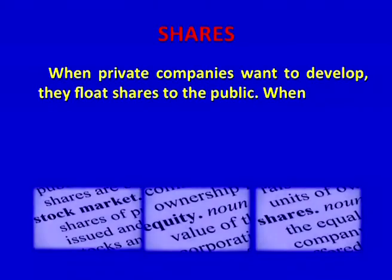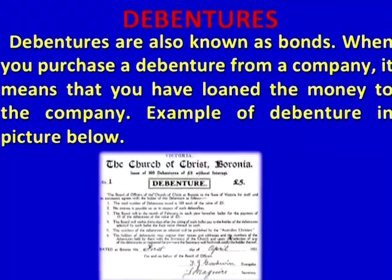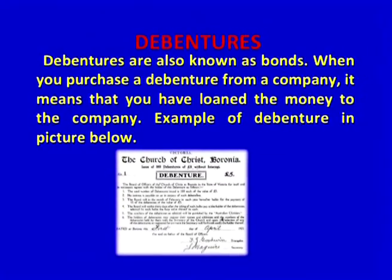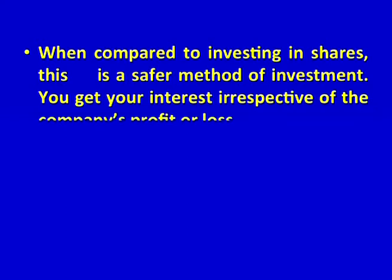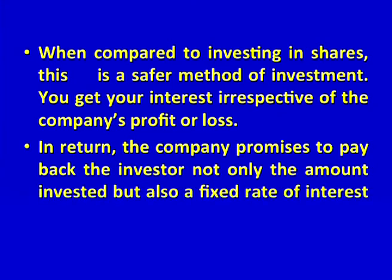Shares: when private companies want to develop, they float shares to the public. When you buy a share, you become a part owner of the company and share both the profit and loss. Debentures are also known as bonds. When you purchase a debenture from a company, it means you have loaned money to the company. Compared to investing in shares, this is a safer method of investment. You get interest irrespective of the company's profit or loss. The company promises to pay back the investor the amount invested plus a fixed rate of interest at regular intervals.